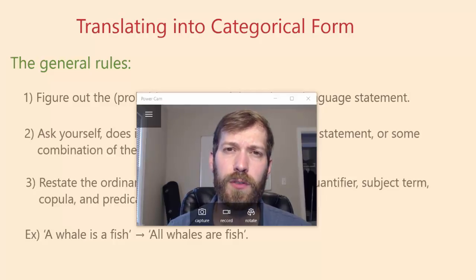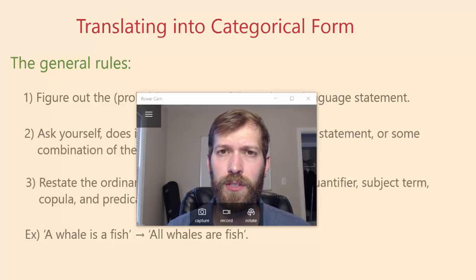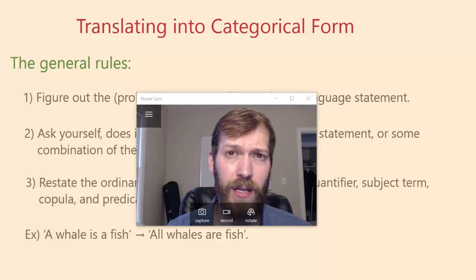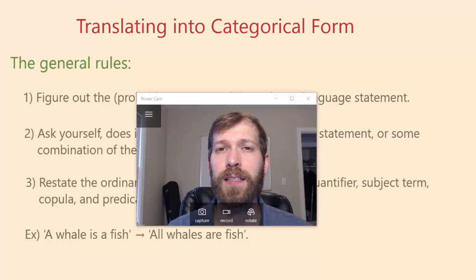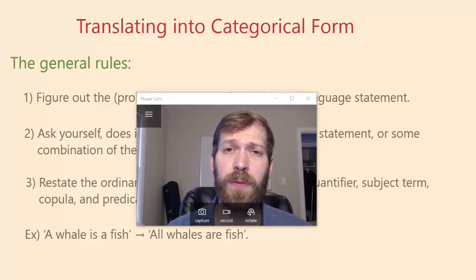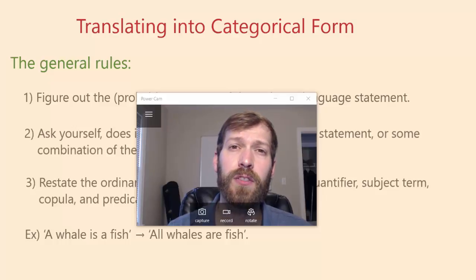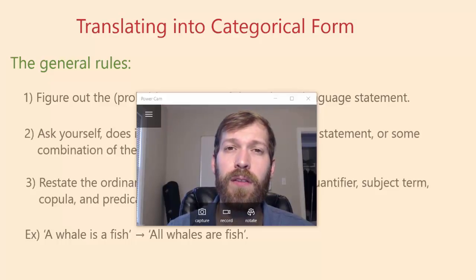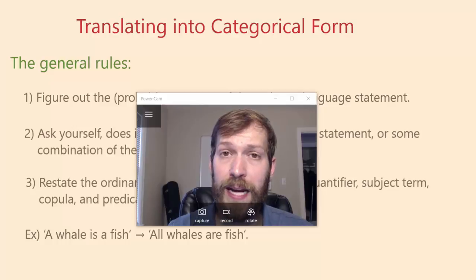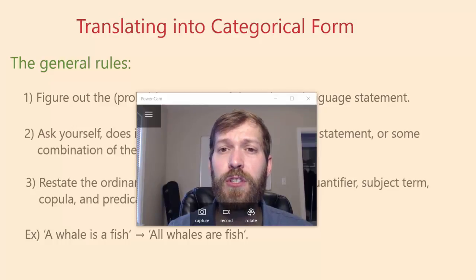In our day-to-day lives, when we want to evaluate categorical syllogisms, we run into a problem: categorical propositions are not put in their standard form. So we have to be able to recognize that it is in fact a categorical proposition being given to us, and we need to figure out how to transform it into its standard form so that we can think about the categorical syllogism in complete clarity. In this video, we're going to look at some rules for translating categorical propositions into standard form.